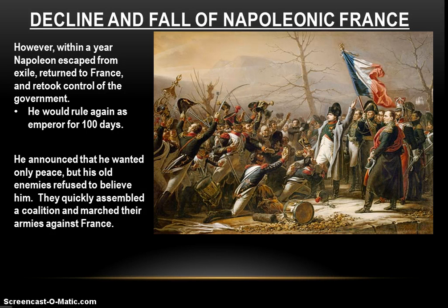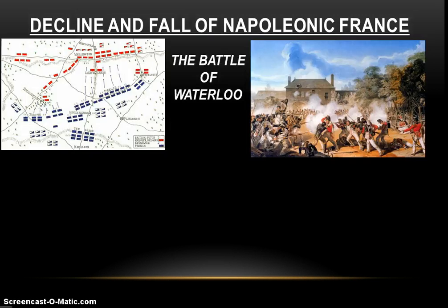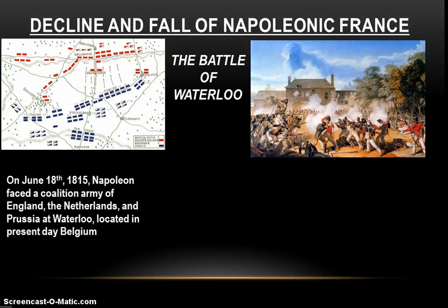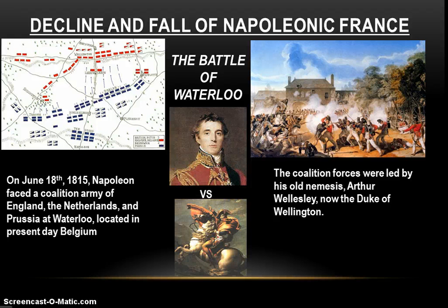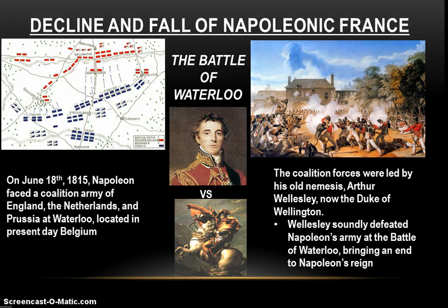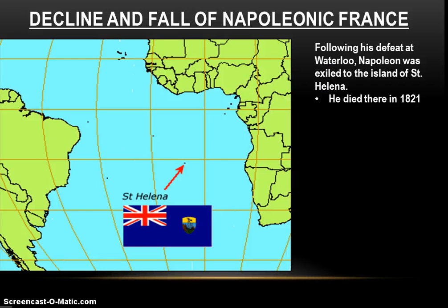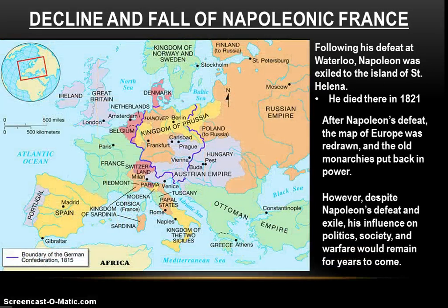Even though Napoleon announced he only wanted peace, his enemies refused to believe him. They quickly assembled a coalition and marched their armies against him, wanting to take him out of commission once and for all. The final battle for Napoleon took place at Waterloo in present-day Belgium on June 18, 1815. Napoleon faced a coalition army of England, the Netherlands, and Prussia, led by his old nemesis Arthur Wellesley — now the Duke of Wellington. At Waterloo, Napoleon was defeated for the last time. Wellesley soundly defeated the now old general, bringing Napoleon's storied military career and reign to an end. Following his defeat at Waterloo, Napoleon was exiled to the tiny island of St. Helena, where he died in 1821. After his defeat, the map of Europe was redrawn and the old monarchies were put back in power — but despite his defeat and exile, his influence on politics, society, and warfare would remain for years to come and can still be felt today.